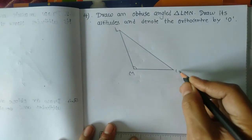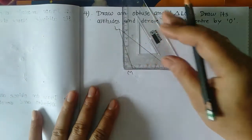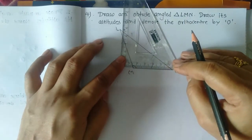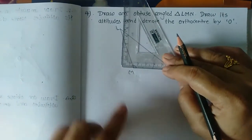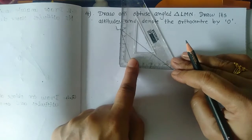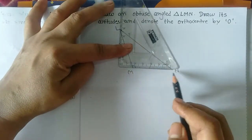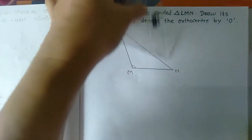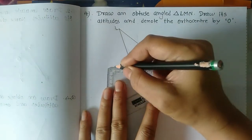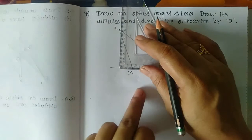Now draw the altitudes. First, draw the altitude from vertex L. The first side of the set square is placed on side MN, and another side intersects the opposite vertex L. But the length of MN is too short to draw the altitude, so first we extend side MN. Now draw the altitude from L.